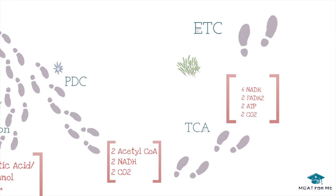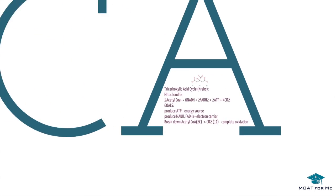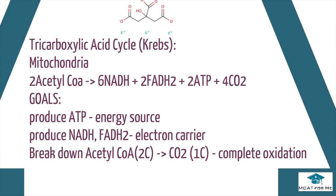Now that we've produced acetyl-CoA from the PDC, we undergo the TCA cycle — the tricarboxylic acid cycle, otherwise known as the Krebs cycle. Citrate is the first intermediate in the TCA cycle, and it has three carboxylic acid derivatives attached to its carbon chain, which is where the name comes from. The TCA cycle also occurs in the mitochondria. Its goals are to break down acetyl-CoA into CO2 (complete oxidation) and to produce ATP, NADH, and FADH2.